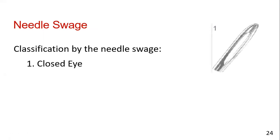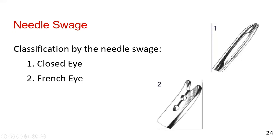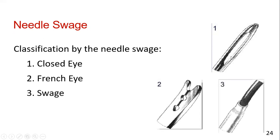Number one is the closed eye. There is also the French eye. Then there is the swaged type — the one we see here, where the suture material is pre-attached by the manufacturer. You have to thread the suture material through the eye in a non-swaged needle, but in the swaged needle it comes ready-packed.